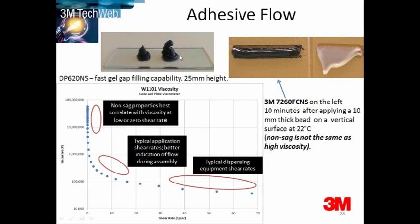On the left, these ice cream cone shapes — this is DP620, that lovely energy-absorbing two-part PU. This has a fast gap-filling capability. So if you need to fill large gaps, consider the gap-filling capability of the adhesive. All these kind of things are interrelated to some degree.